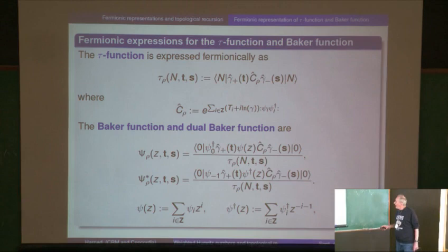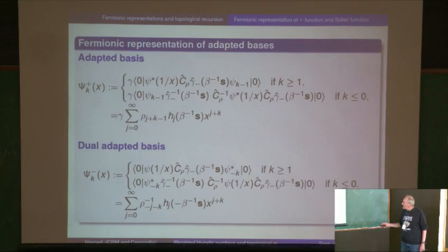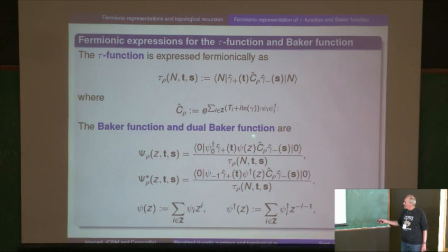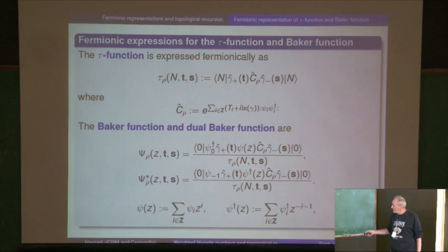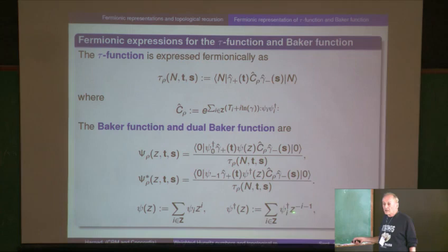Here's the Baker function. This has a representation in terms of a group element with a creation operator and annihilation operator that tells you the point at which it's evaluated. That's the dual Baker function. For those not familiar, we saw this in the previous talk except that this is single component whereas what we were looking at before was multi-component. There's a natural basis obtained by taking the monomials z^i, thinking of that as a basis for the underlying Hilbert space, and then dressing it with a group element — that gives you a sequence of basis states.